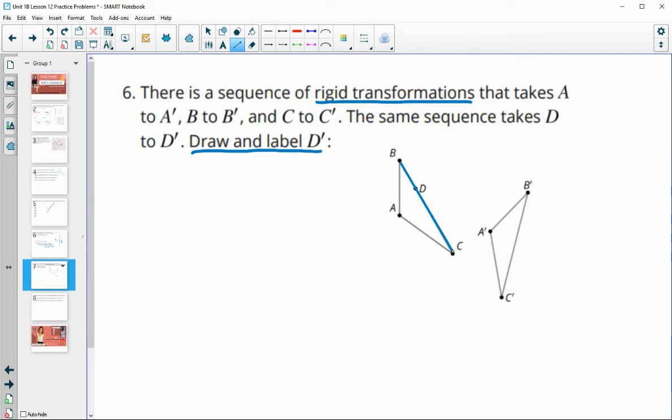So we know D is on this segment. So D prime is also going to be on the image of that segment. D is this distance from B. So it's going to be that distance from B prime as well. So if you had a compass, you could just open your compass to that length. So you could actually do the exact measure. But if you're just sketching, making it look about the same distance is good.